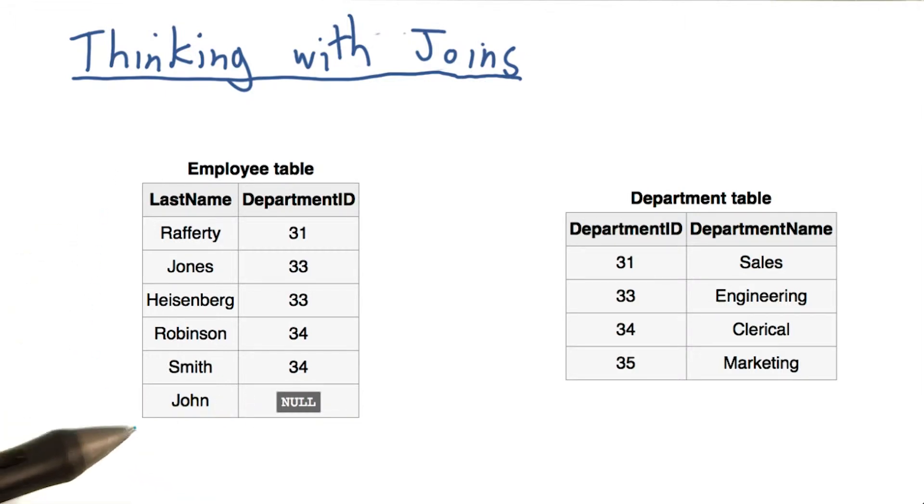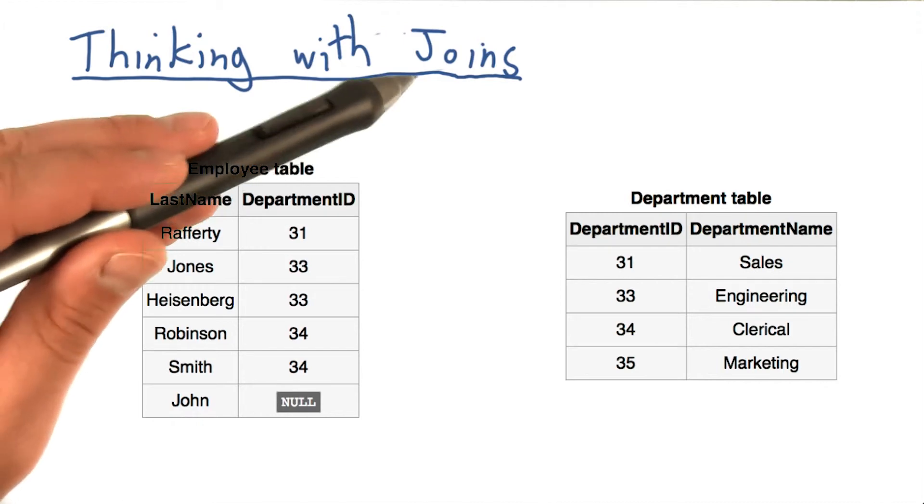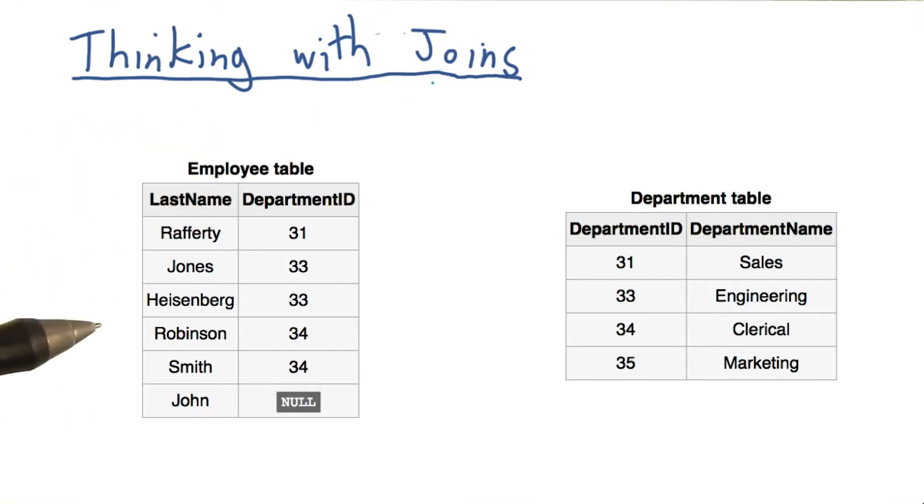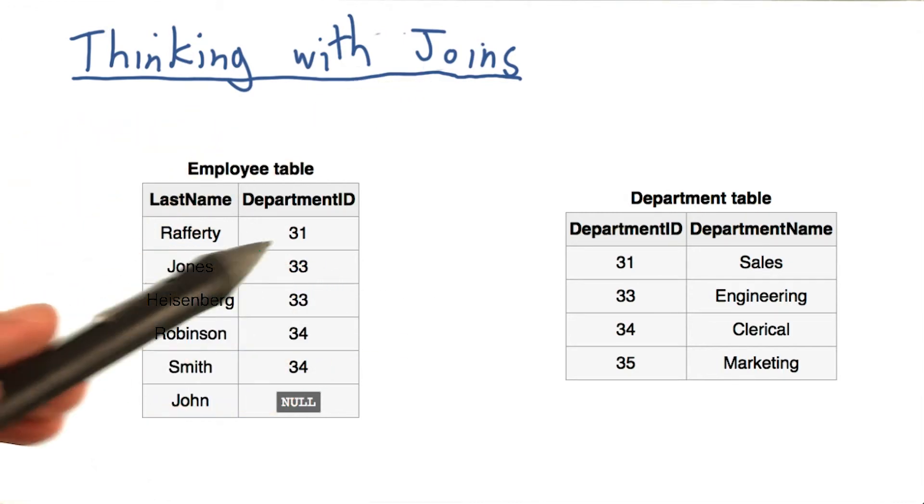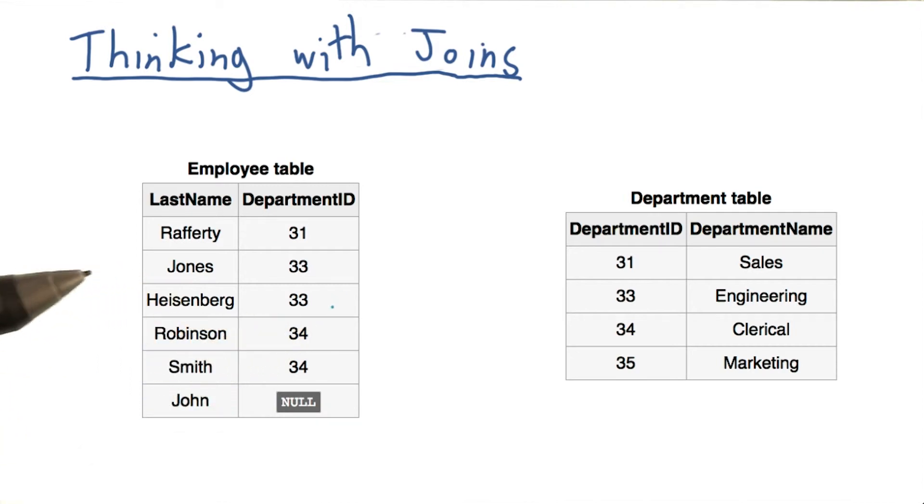These tables are example tables from the Wikipedia article on joins, which explains all of the concepts I'm going to go over in much more depth. A join can be thought of as a union of two different tables, combined in some way such that it makes sense.